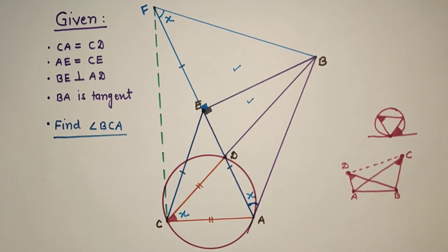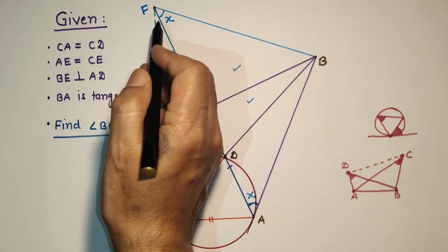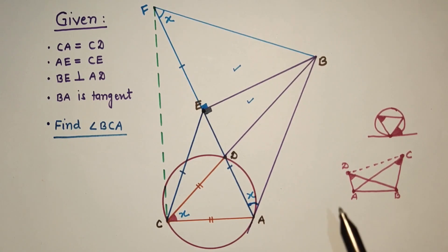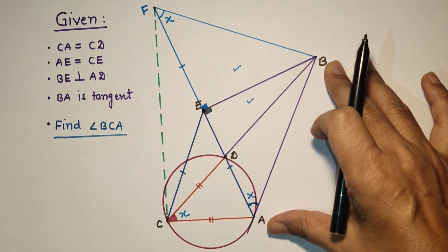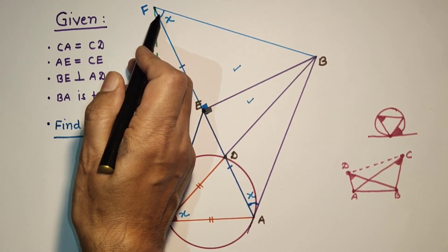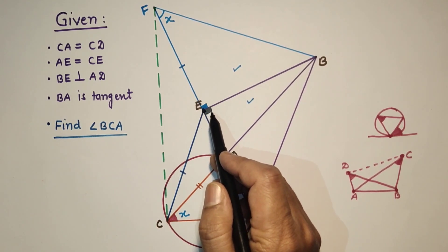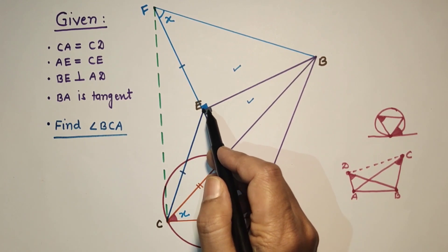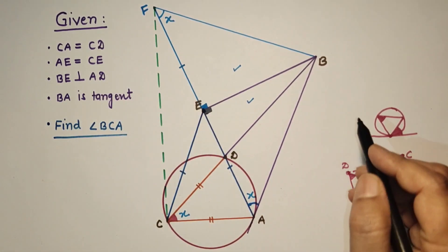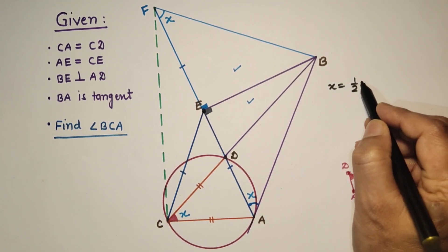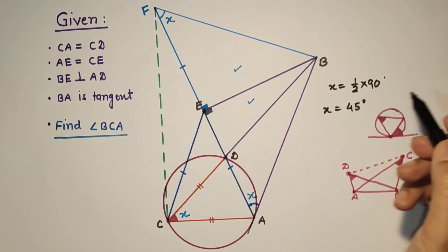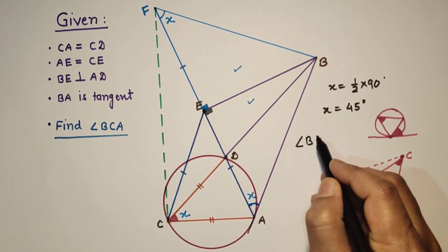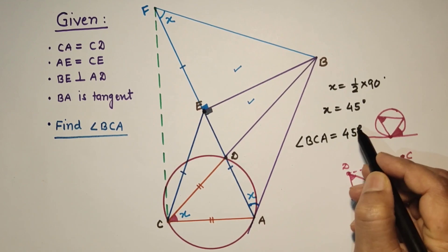As we know, the angle subtended at the circumference is half the angle subtended at the center by the same chord or arc. Here, BA is the chord subtending angle X at the circumference and 90 degrees at the center (since BE is perpendicular). So X equals half of 90, which gives X equals 45 degrees. Therefore, angle BCA is equal to 45 degrees — that is the answer.